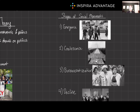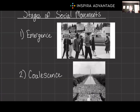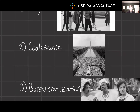To better contextualize this, let's consider the civil rights movement in the United States. During the emergence stage, the movement began to form in response to widespread segregation and discrimination against African Americans. It was initially fragmented, with various local groups advocating for civil rights and equality. Then it began to coalesce — this stage saw the movement gain momentum, with significant events such as the 1963 March on Washington for Jobs and Freedom, where Martin Luther King Jr. delivered his iconic 'I Have a Dream' speech. The movement coalesced around a shared set of goals, including ending segregation and ensuring voting rights.